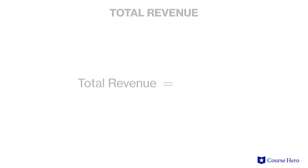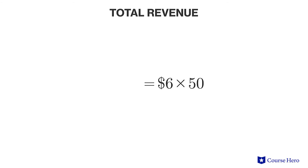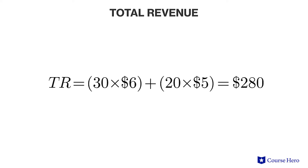In the simplest case, if a producer sells all of its output at the same price, then total revenue is equal to price times quantity. However, if the producer's output is sold at various prices, total revenue can be calculated by multiplying each price by the quantity sold at that price point and then adding these numbers together to get total revenue.